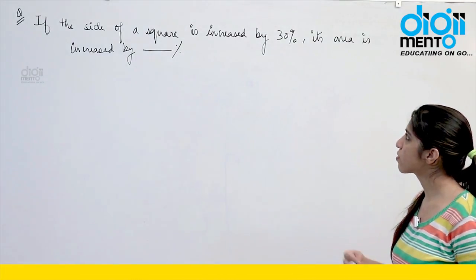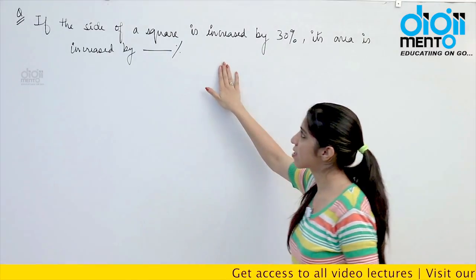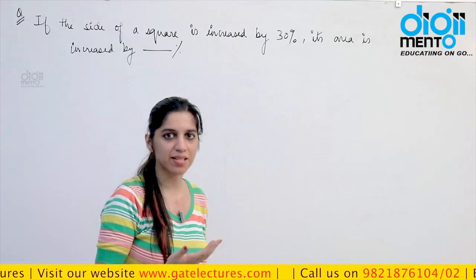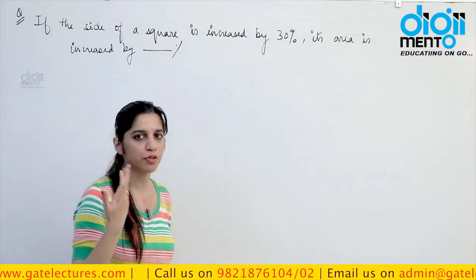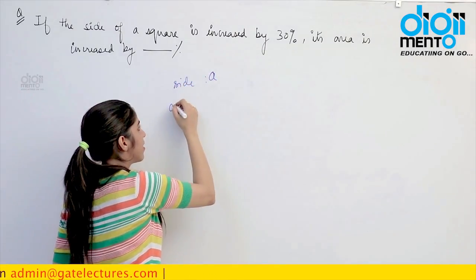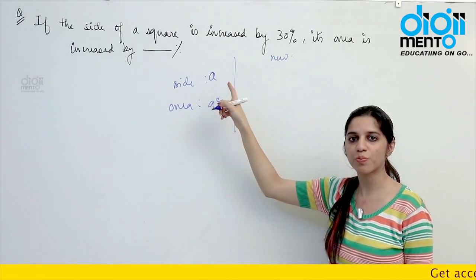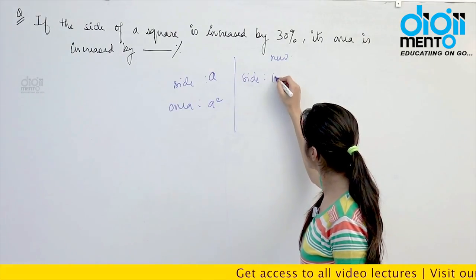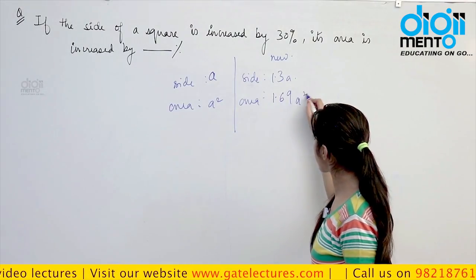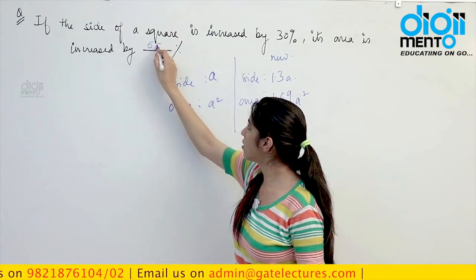Look at the next question — a side of a square is increased by 30%. By how much does the area increase? Consider one side initially as A, so area initially = A². When the side increases by 30%, the new side = 1.3A, and the new area = (1.3A)² = 1.69A². Clearly this is 0.69 more than the original, so the area increases by 69%.